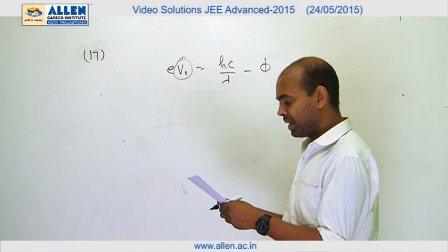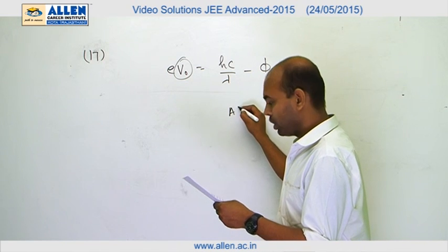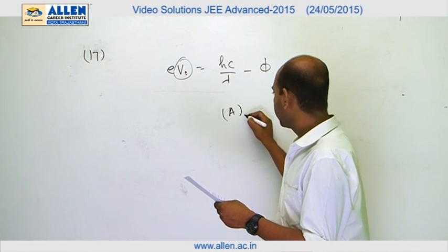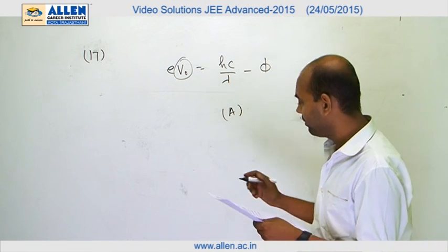If we try to draw the graph of V0 and lambda, it would be a hyperbola shifted. So the answer of this part will be A, because in the case of A and B, A is the hyperbola and B is the straight line.